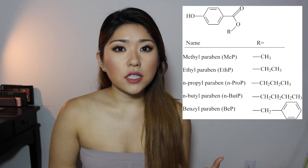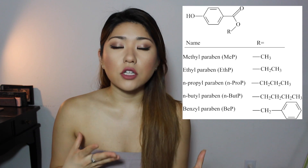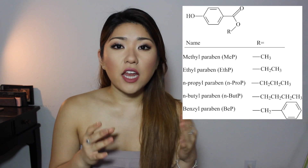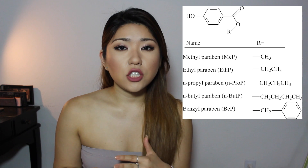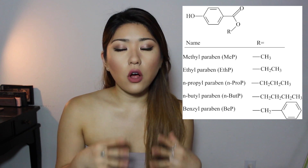The R group on that ester is changing for every single different type of paraben, which makes each one different from the others. Here's a good chart of some common parabens and how their molecular structures differ. As you can see, that R group is the only thing that's really changing — otherwise, the central structure is the same for all parabens. Parabens have been used since the 1930s as a preservative.